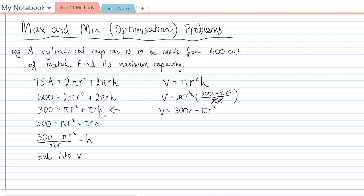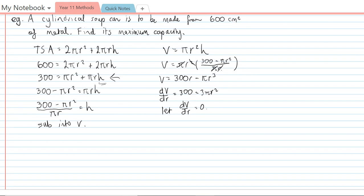So again, I want to find the maximum in this case. I've got an equation which is in terms of a single variable, which is great. So I can just differentiate and then make the derivative equal zero. So dV/dr is going to be 300 - 3πr², and let dV/dr = 0 for the maximum.